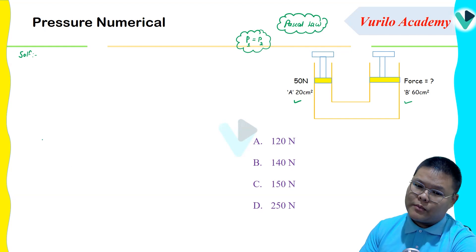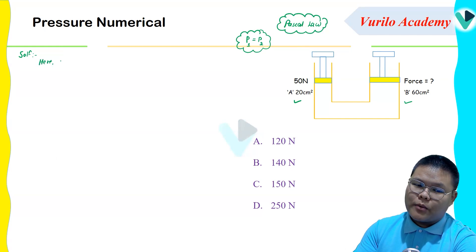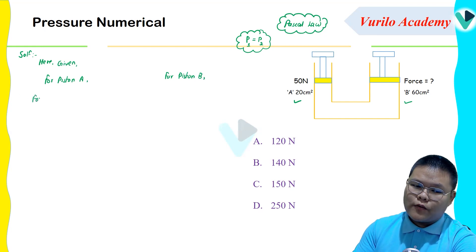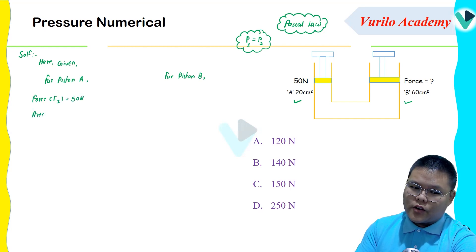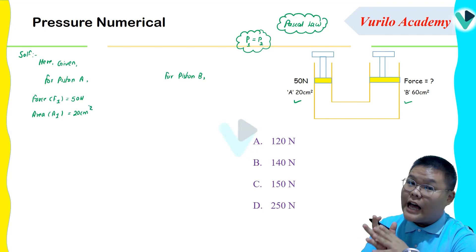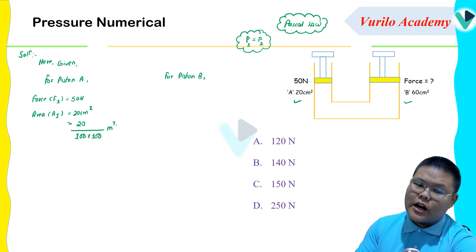So first, the family here: given for piston A, the area is 20 cm square. And for piston B, we have the second value. The area is equal to 20 cm square. We always have to convert it into SI units — divide by hundred into hundred.